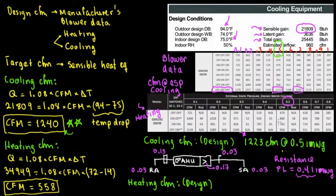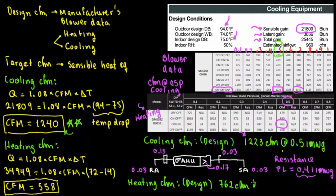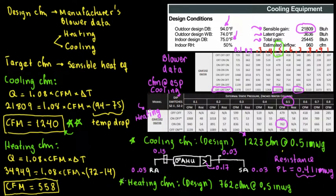The design CFM closest to the target of 558 is 762 CFM at 0.5 inches of water column. So the design heating CFM is 762 CFM at 0.5 inches of water gauge. This is the first step to perform duct design, because after we have the complete CFM, we can distribute the CFM to different ducts.